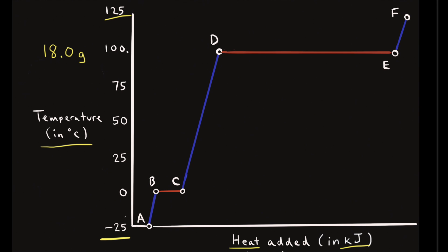We're starting with ice at negative 25 degrees Celsius and first we need to heat up the ice to zero degrees Celsius, which is the melting point. So on our heating curve, we're going from point A to point B. To calculate the heat necessary, we use Q = mCΔT, where Q is the heat added, m is the mass of the ice, C is the specific heat of ice, and ΔT is the change in temperature — final minus initial.